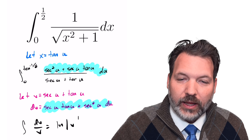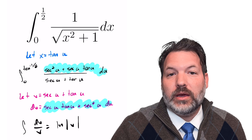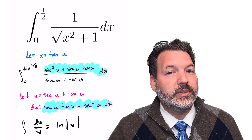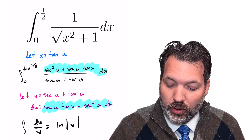When we integrate dv over v, we get the natural log of v. I'm going to skip updating the bounds and instead back-substitute: v equals secant u plus tangent u. So we evaluate the natural log of secant u plus tangent u from 0 to the inverse tangent of one half.